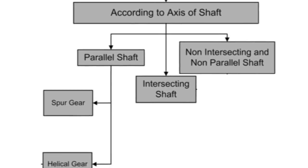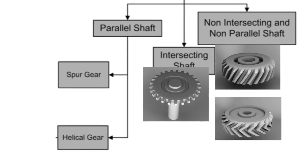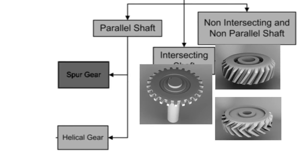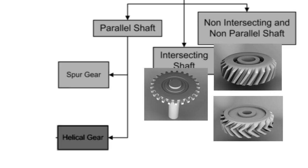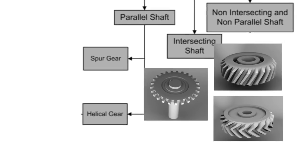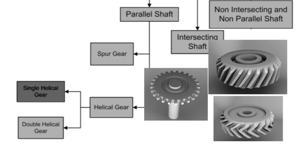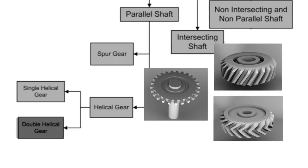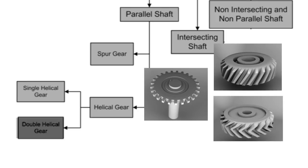Parallel shaft gears are classified into two groups: spur gears and helical gears. Further, helical gears are classified into two groups: single helical gears and double helical gears, or herringbone gears.